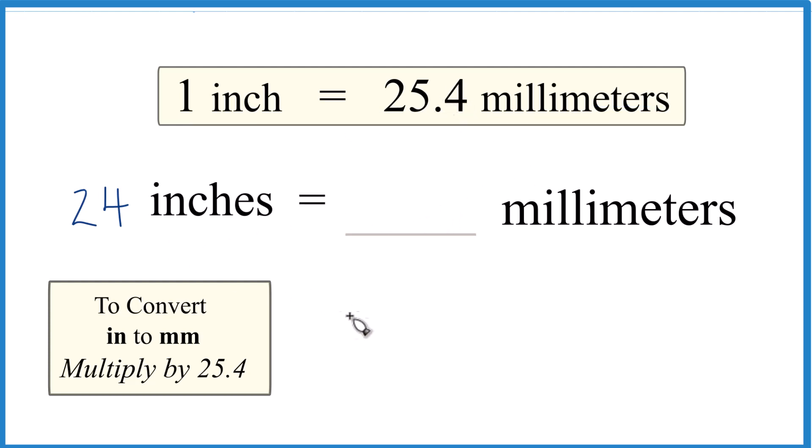24 inches times 25.4 millimeters. Remember we have 25.4 millimeters in one inch, per inch, so we can put it like this. When we multiply, inches on the top and the bottom cancel out. So we know we did it correctly.